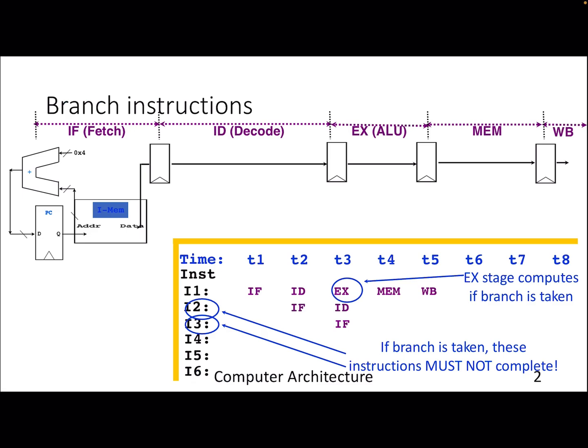A quick recap: when we talk about a branch instruction, the first three stages are fetch, decode, and execute. Some branches — we know whether they will be taken or not taken and the target — at the decode stage. For conditional branches, we need to resolve them at the end of the execute stage, and that is when the PC gets its value based on the branch condition outcome.